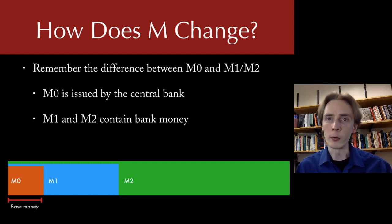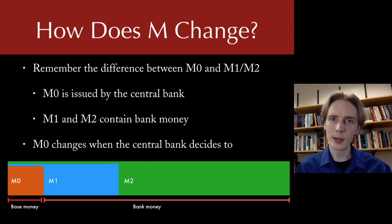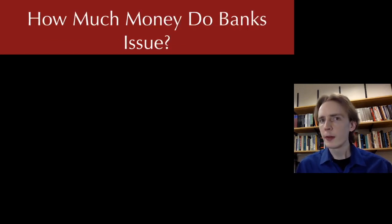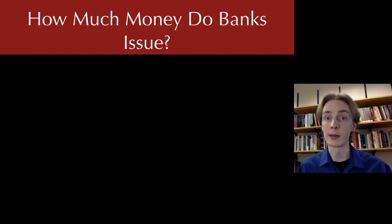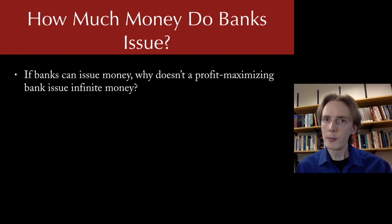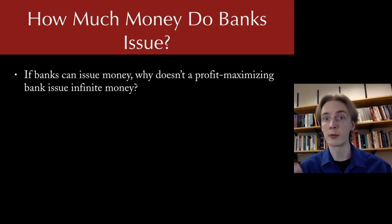M0, our base money, is under the direct control of the central bank — whenever the Fed decides M0 should change, it changes. That's a different kind of explanation than the situations under which bank money changes. The Federal Reserve has the power to decide how much M0 there is in the economy. So if commercial banks issue M2, maybe they have the power to decide how much bank-issued money there is — but that's not really true. If banks had the power to issue money, why wouldn't they just issue infinite amounts of money?